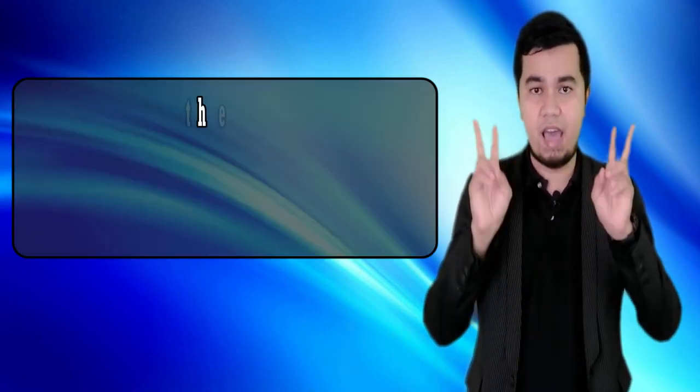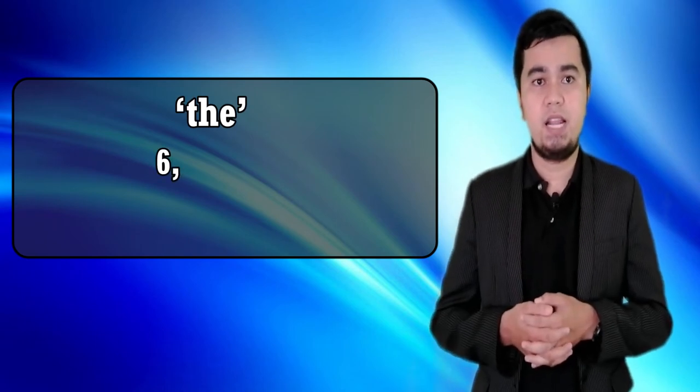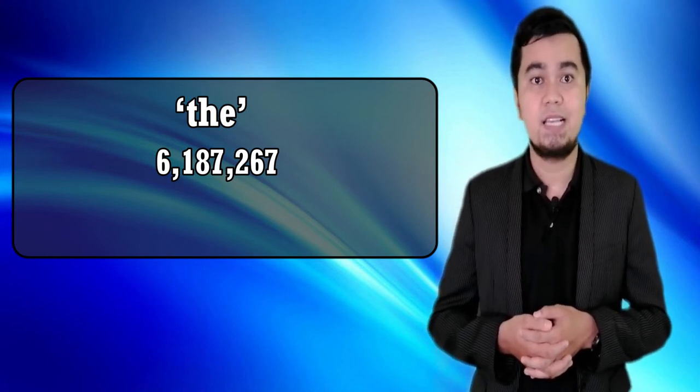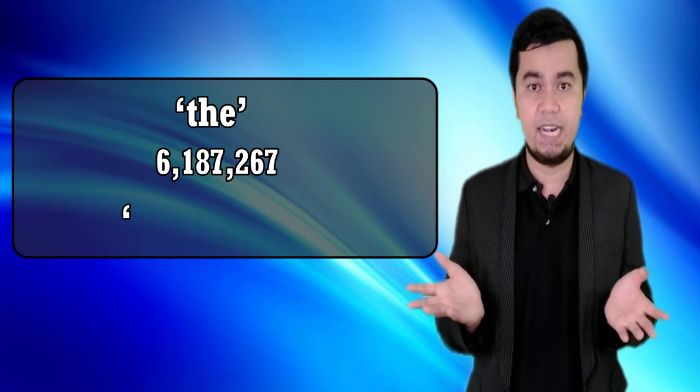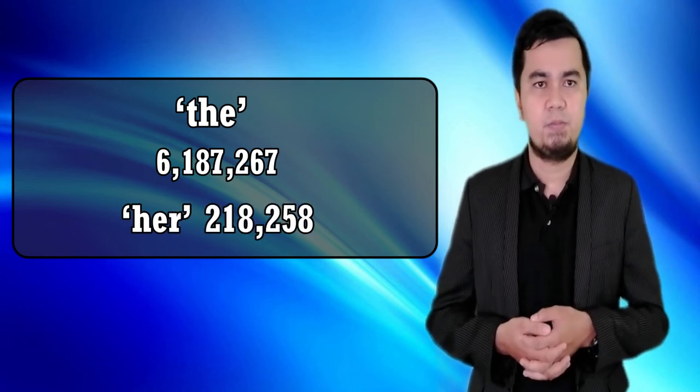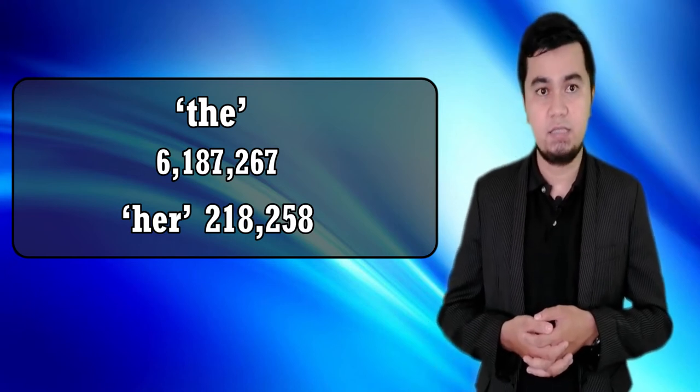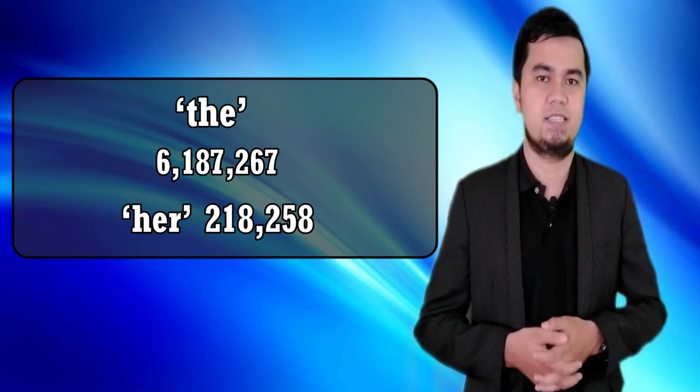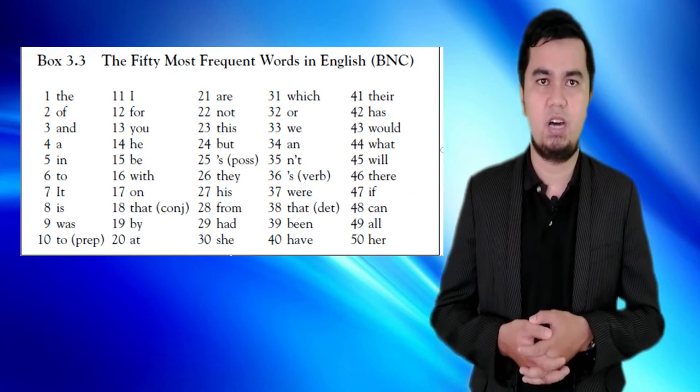Most teaching has been based on the idea that the most frequent words in the target language should be taught first. Almost all beginners' books restrict vocabulary in the first year to about a thousand frequent words. Do you know that the most frequent word is 'the,' occurring six million times? The 50th most frequent word, 'her,' occurs around 200,000 to 258,000 times. You can see these figures on the screen.